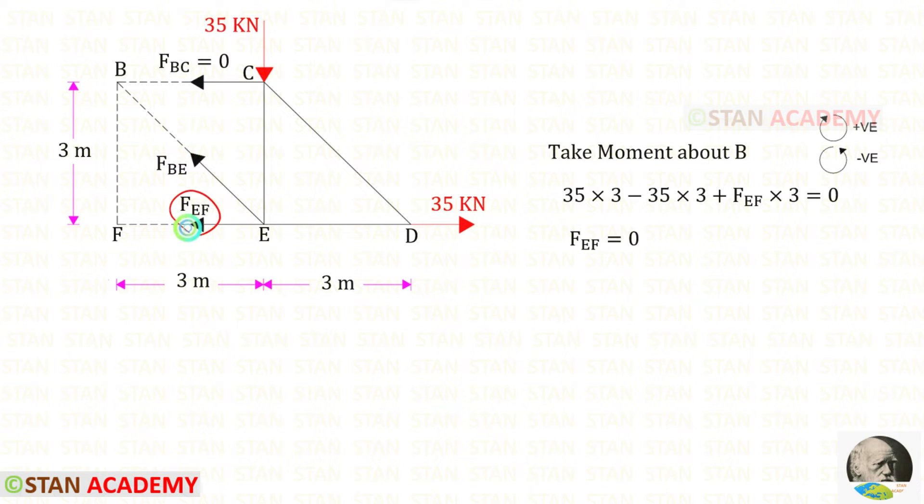To find FEF we can take moment about B. When we take moment about B, we should not consider FBC. Anyway, it is already 0. We should not consider FBE. The remaining forces are FEF, 35 and this 35. This 35 is acting in the clockwise direction so it will be positive and the distance is 3. This 35 is acting in the anticlockwise direction so it will be negative and the distance is 3. We can eliminate these two. Finally, for FEF we will get 0.